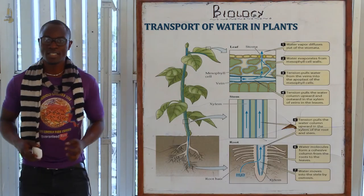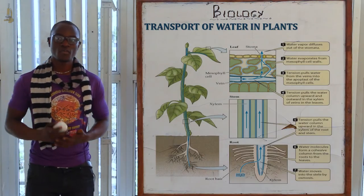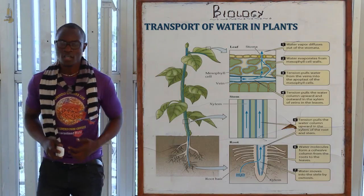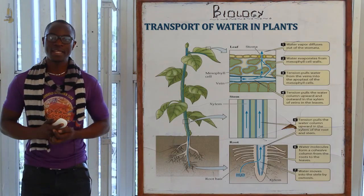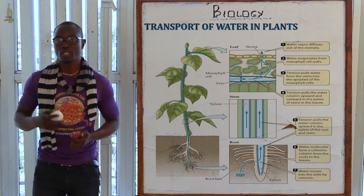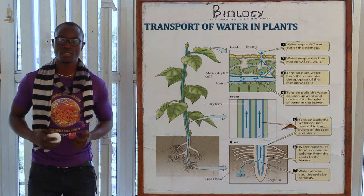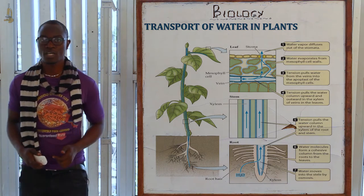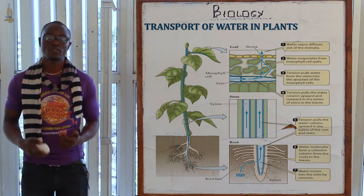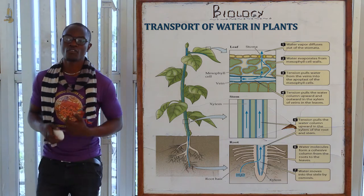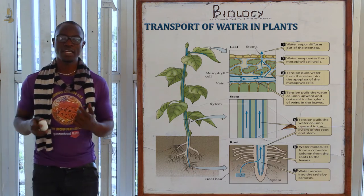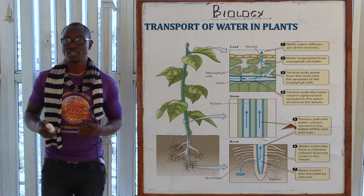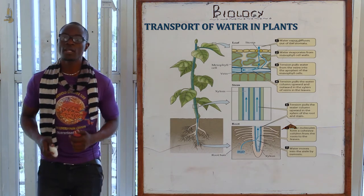Let's now look at transport of water in plants. The transport of water in plants mainly involves the uptake of water and mineral salts from the ground, as well as the movement of water through the xylem to the leaves of the same plant.